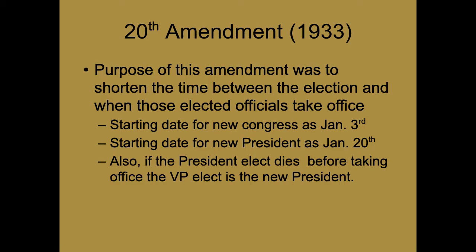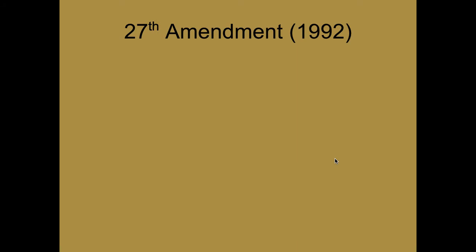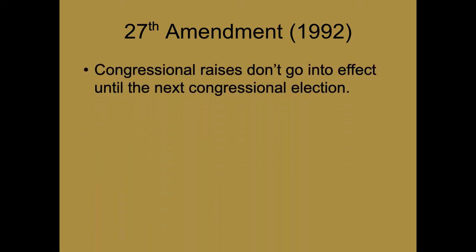The 20th Amendment also addressed what happens if the president-elect dies between November and January — the elected vice president would take office. The 27th Amendment dealt with congressional raises: if Congress gives themselves a raise, they don't receive that raise until the next congressional election. So if we don't like the fact that they gave themselves a raise, we can vote them out of office, and those people won't get that raise.